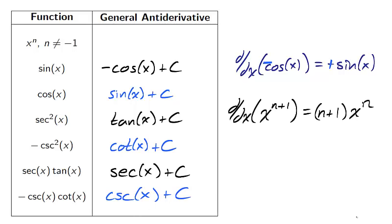The derivative of x to the n plus 1, using the power rule, is n plus 1 times x to the n. If we assume that n is not equal to negative 1, then n plus 1 is not 0, which means that we can divide by it.